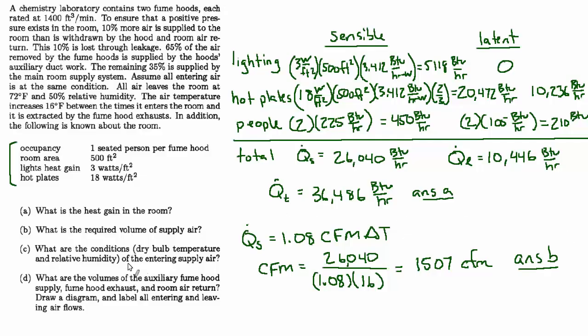They want to know what are the conditions of the entering supply air. Well, we know that the leaving air is 72 degrees and the Delta T is 16 degrees, so it's pretty easy to say what the temperature is. If Delta T is 16, and Delta T is return minus supply, then the supply air is going to be return minus 16, which equals 72 minus 16, so 56 degrees is the temperature of the supply air.